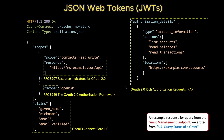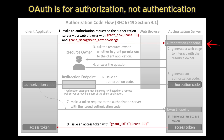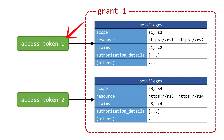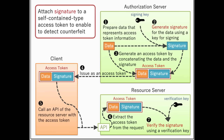OAuth 2.0 by itself is an authorization framework, not an authentication protocol. It's designed so that a user can grant a third-party application limited access to their data without exposing credentials. For example, letting a photo printing app read your Google Photos. The app receives an access token that allows it to call an API on the user's behalf. However, OAuth does not actually verify who the user is. The token only proves that someone granted permission — it carries no inherent identity information. This is fine for pure API access scenarios like backend integrations or service-to-service communication, but it's insufficient when a client app needs to authenticate a user for login purposes.